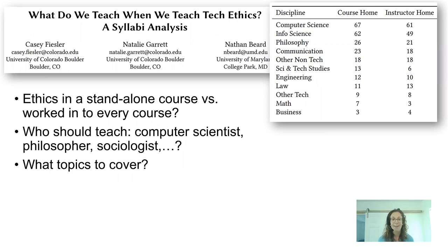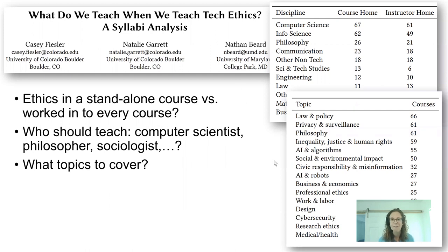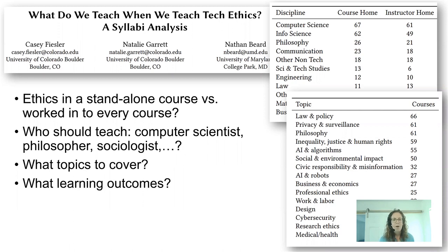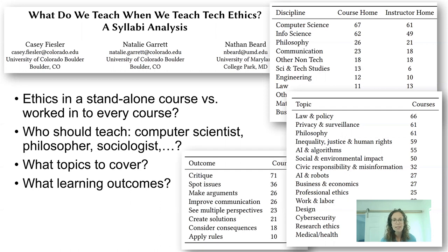Then there's the question of what topics to cover — this is such a broad field. A list of possible topics includes: law and policy, privacy and surveillance, philosophy, inequality, justice and human rights, AI and algorithms, social and environmental impact, AI and robots, work and labor, cybersecurity. This is way more than you can cover in any one course, but these are all important topics. In terms of learning outcomes, this was where there was the most agreement across syllabi — being able to critique products and design decisions, spotting issues, making arguments, and improving communication showed up repeatedly.